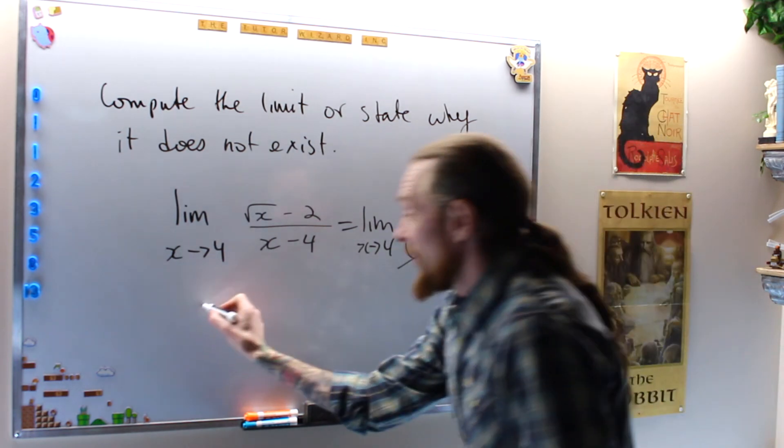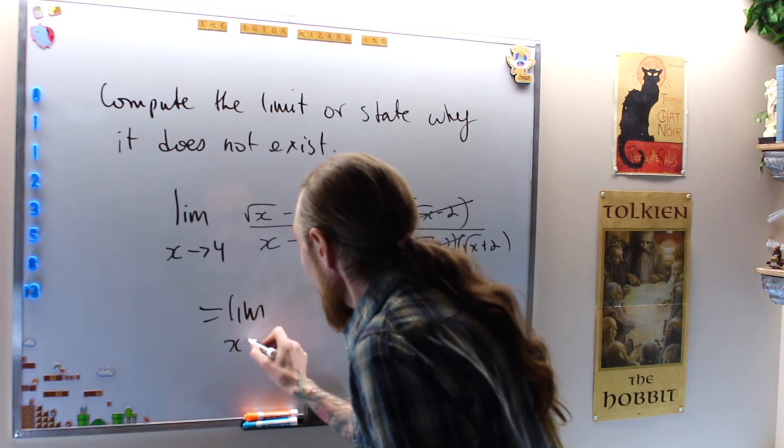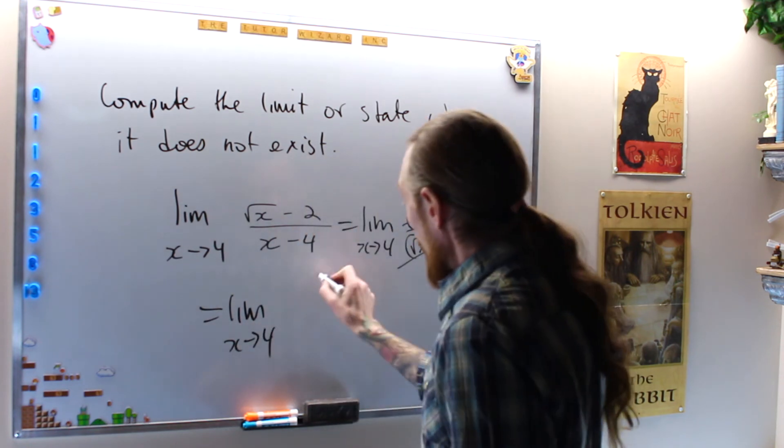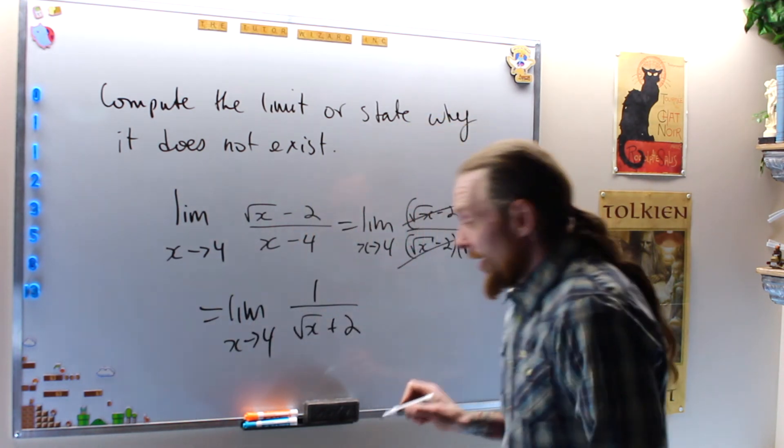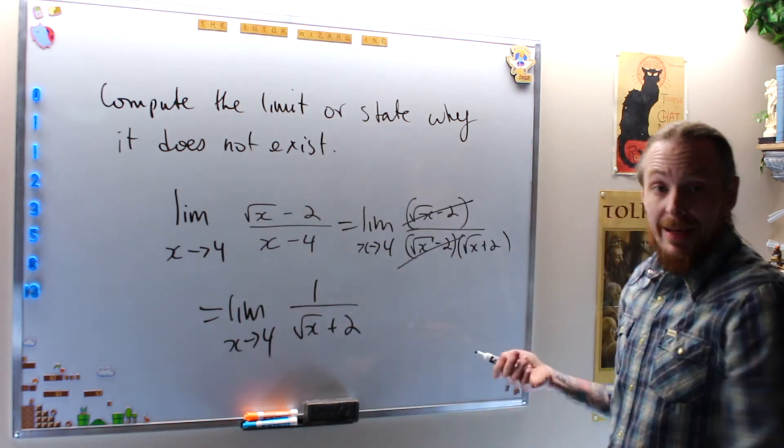I simplify it one more time, the limit as x approaches 4 of 1 over the square root of x plus 2. Now, after I simplify and I make a clever move, I look at it.